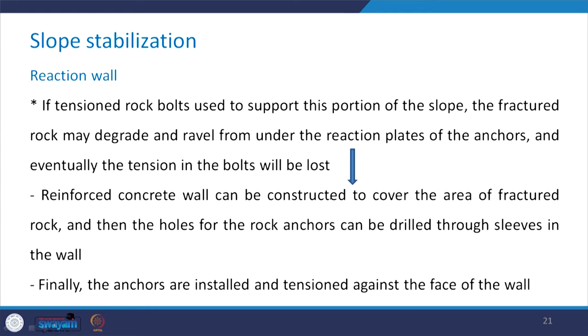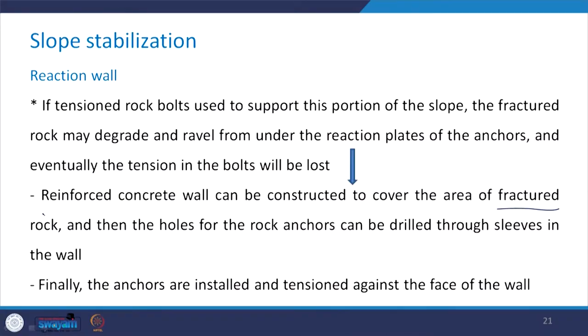Eventually, the tension in the bolt will be lost, which is not desirable. Therefore, a reinforced concrete wall can be constructed to cover the area of fractured rock. The holes for the rock anchors can then be drilled through sleeves in the wall, and finally the anchors can be installed and tensioned against the face of the wall. That is how both anchors and reaction walls need to be provided in such a situation.